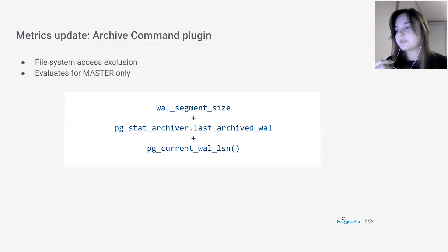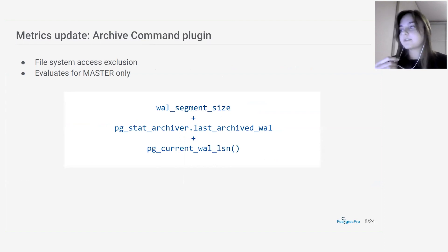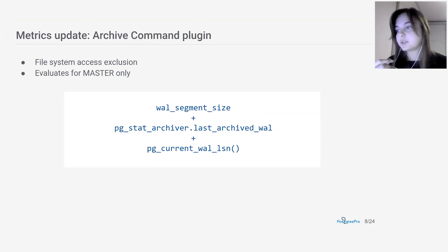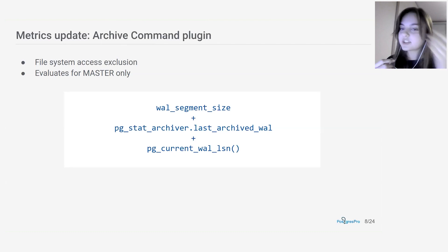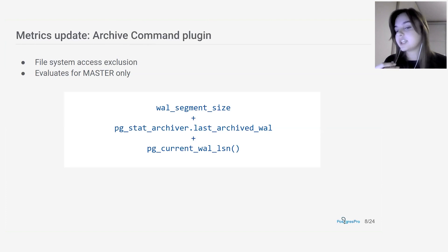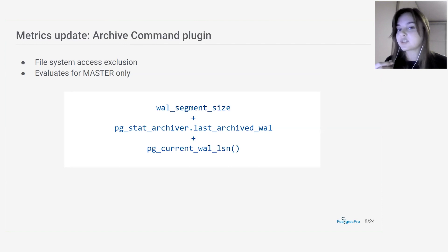We have also minimized access to the file system and the use of objects that require superuser rights in the database. This affected, for example, the archive plugin of Mamoncel. For the archive queue size and archive queue length metrics, instead of direct file system scanning and counting files, the write-ahead log segment size, the pg_stat_archiver view, and log sequence number evaluating functions are used. The metric depends on the specified segment size and the resulting query is sophisticated, but you can find it in the source code on GitHub and leave an issue or contact us by email with any questions.